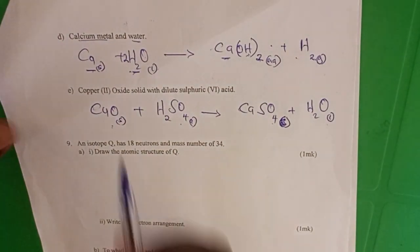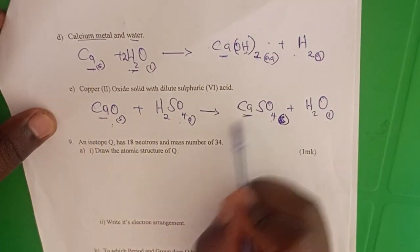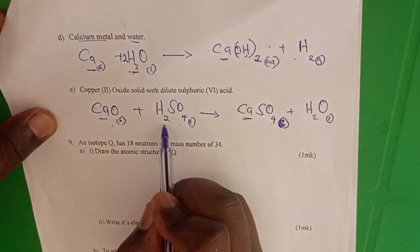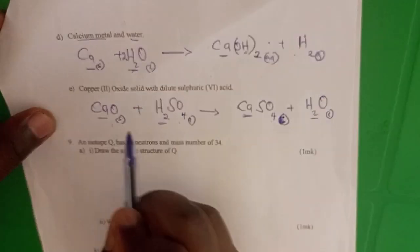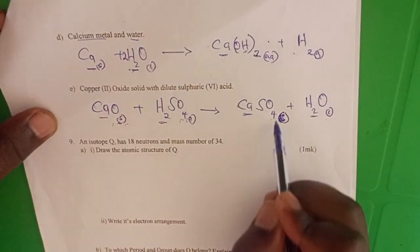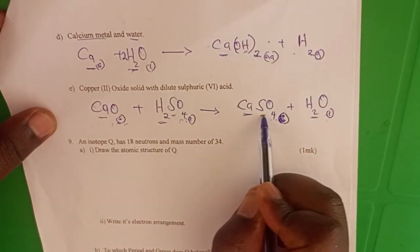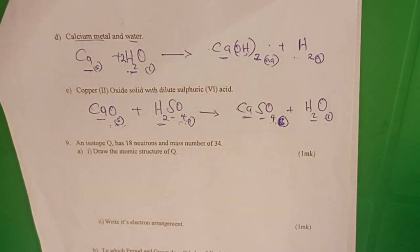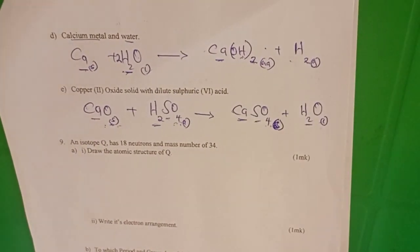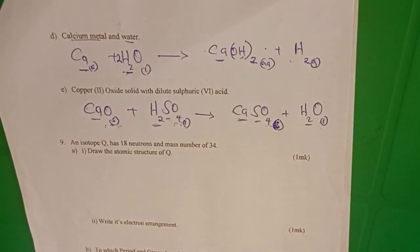Balancing: one calcium each side, one hydrogen each side, five oxygens each side — five oxygens, one sulfur each side. So that equation is balanced. Thank you for tuning in to this channel — kindly share and subscribe for more videos.